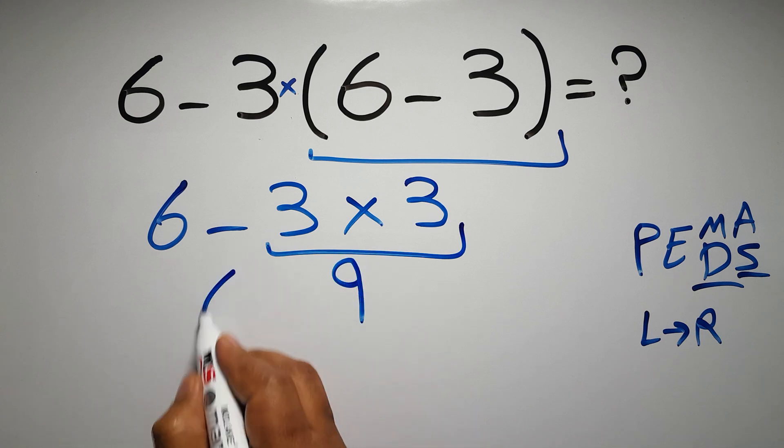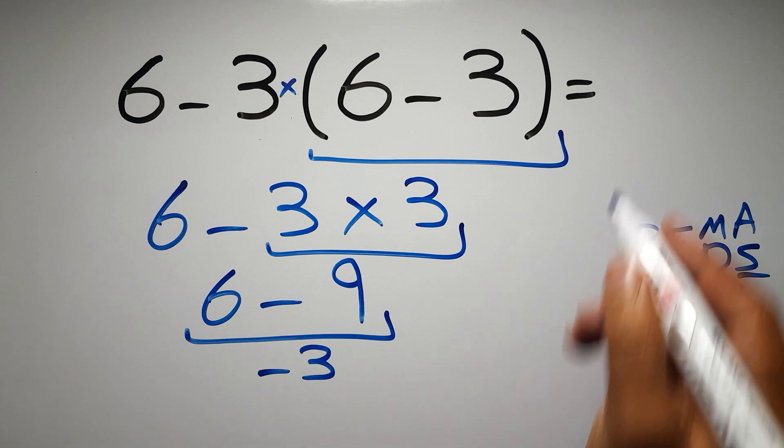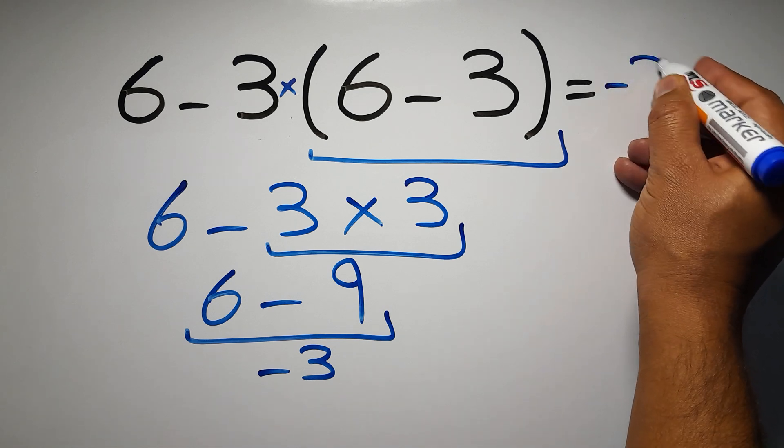So 6 minus 9, which equals negative 3. And this is our final answer to this problem. The correct answer is negative 3.